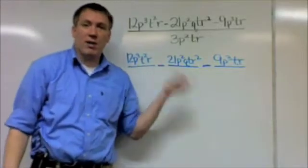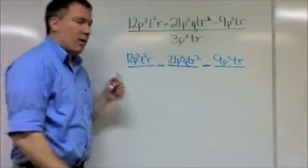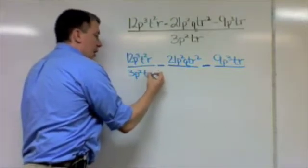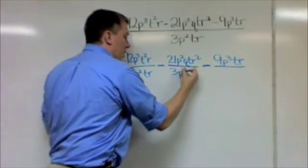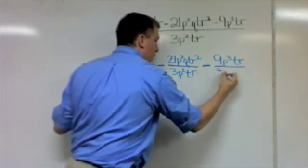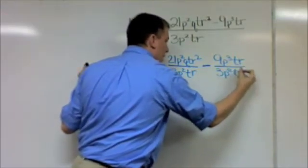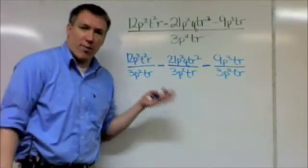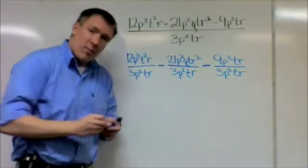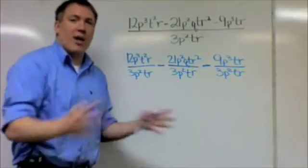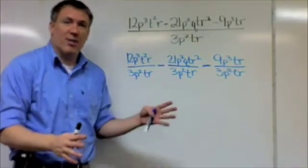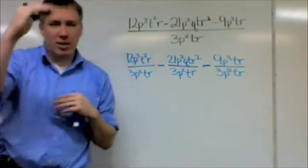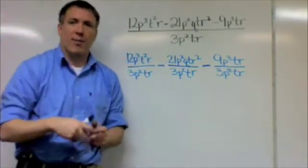Now all of these are being divided by the same thing. So 3p²tr is going to go underneath all of these. And now this is a question from the first section, from dividing monomials. So I divide numbers just the same way. When I divide things with letters and powers, I'm going to subtract top power minus bottom power.